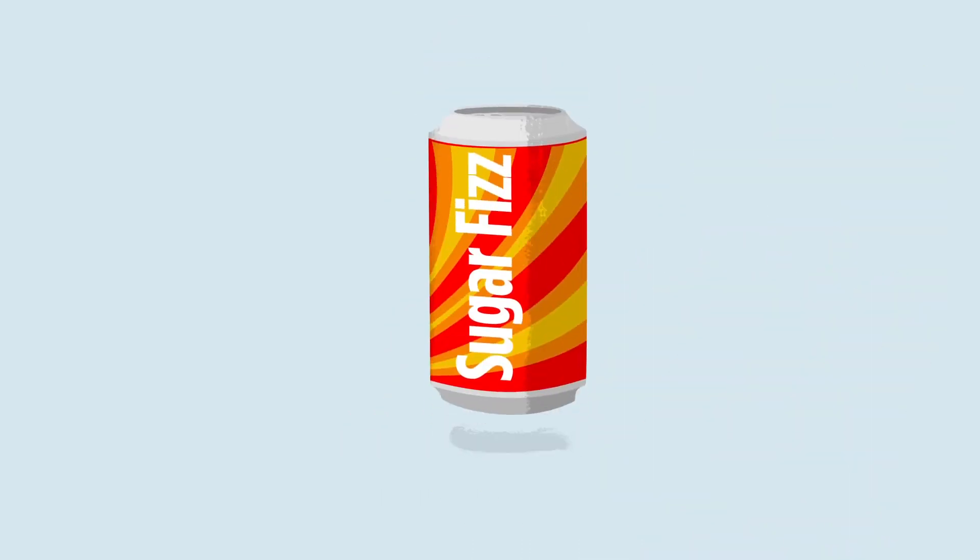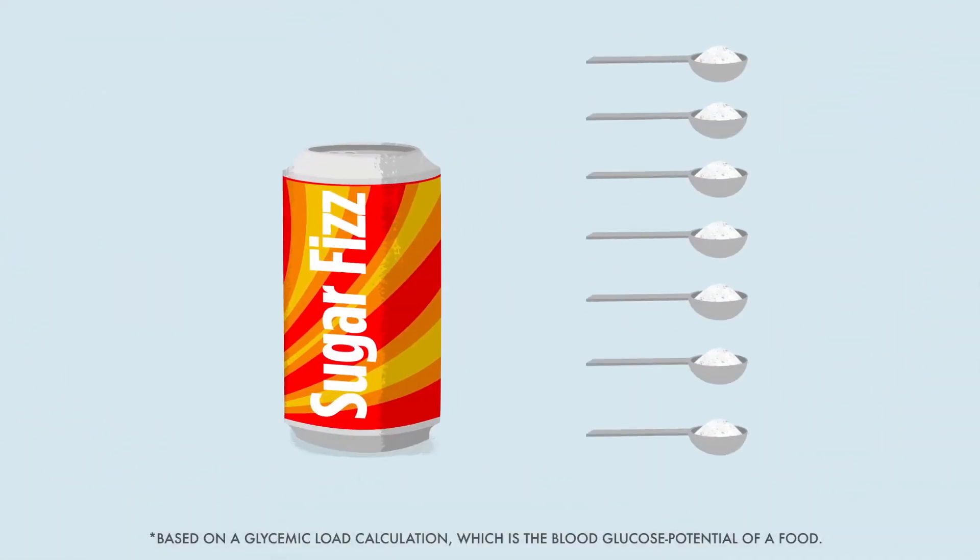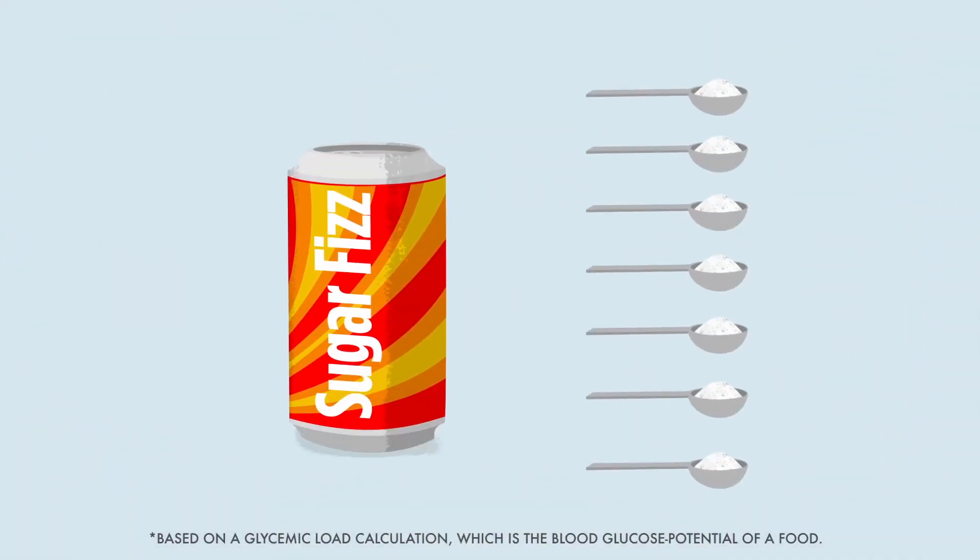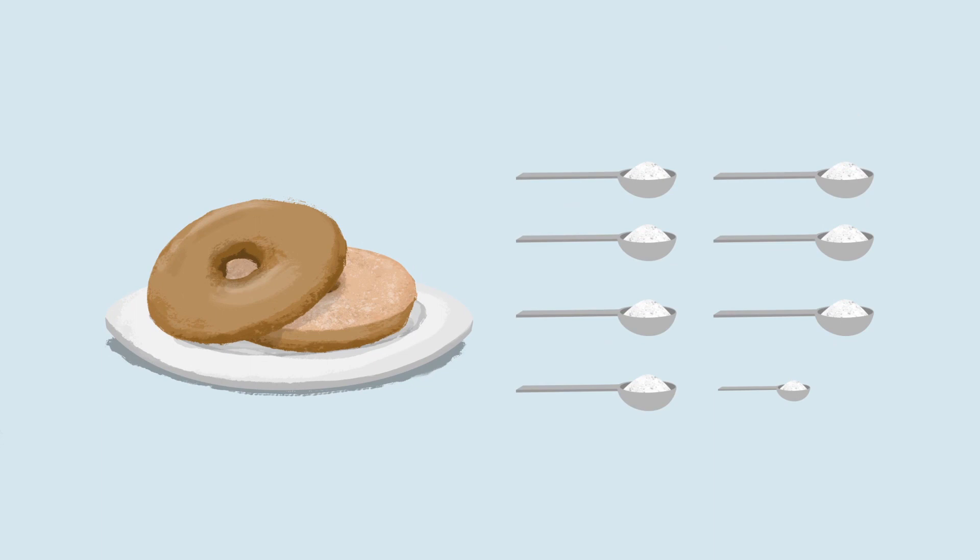Let's start with a food that you know is pretty bad for you. Here's a can of sugary soda. That would have an effect on your blood sugar equal to eating over 7 teaspoons of sugar. But lots of foods have the hidden sugar effect. Let's take a plain bagel. It's the equivalent of eating over 7.5 teaspoons of sugar.